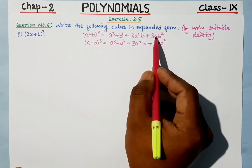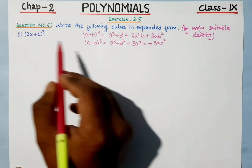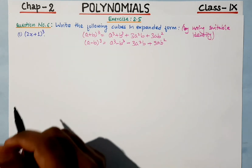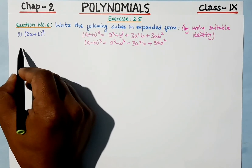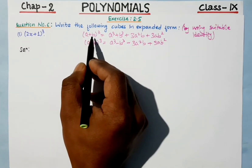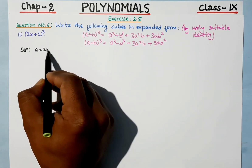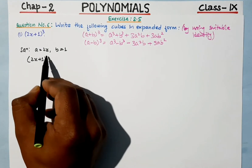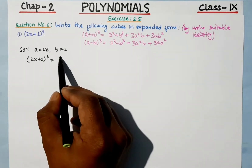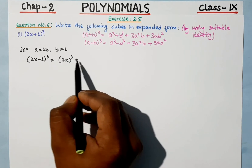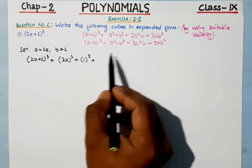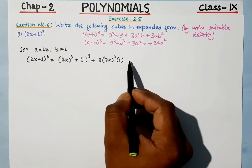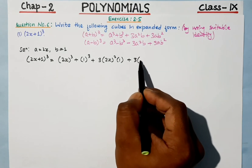So we are going to use the plus identity. Our question is (2x + 1) whole cube. Here a equals 2x and b equals 1. So we substitute: a cube becomes 2x cube, b cube becomes 1 cube, and we have plus 3a squared b and plus 3ab squared.